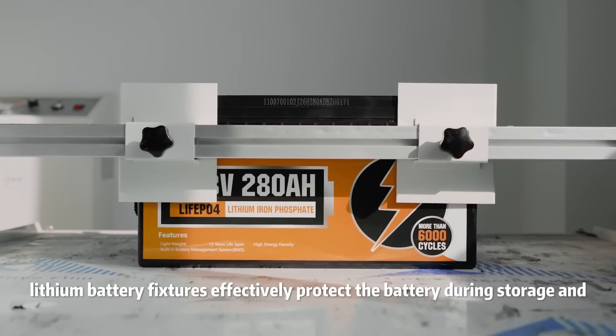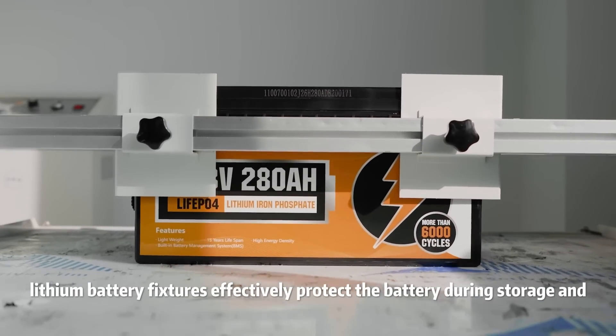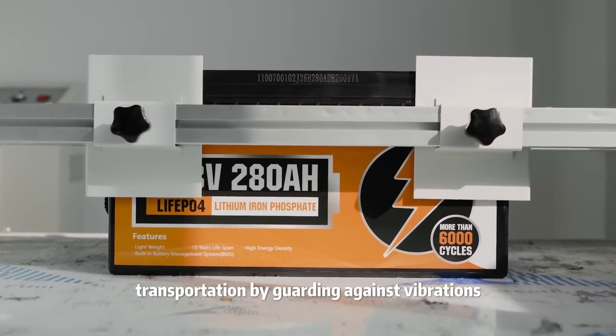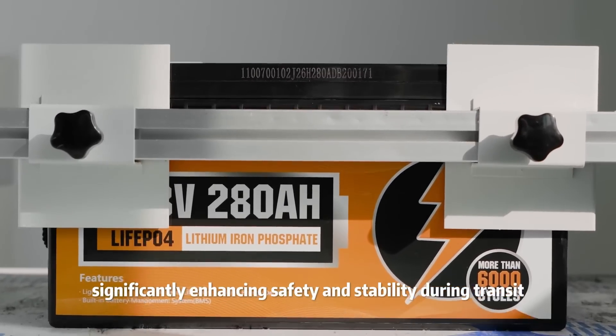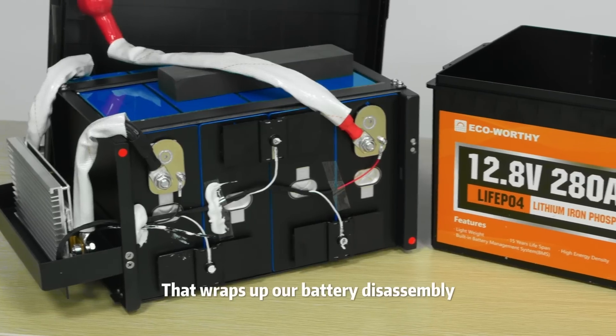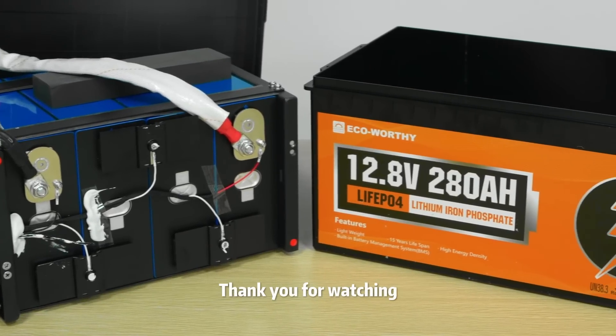Additionally, lithium battery fixtures effectively protect the battery during storage and transportation by guarding against vibrations, leaks, and impacts, significantly enhancing safety and stability during transit. That wraps up our battery disassembly. Thank you for watching.